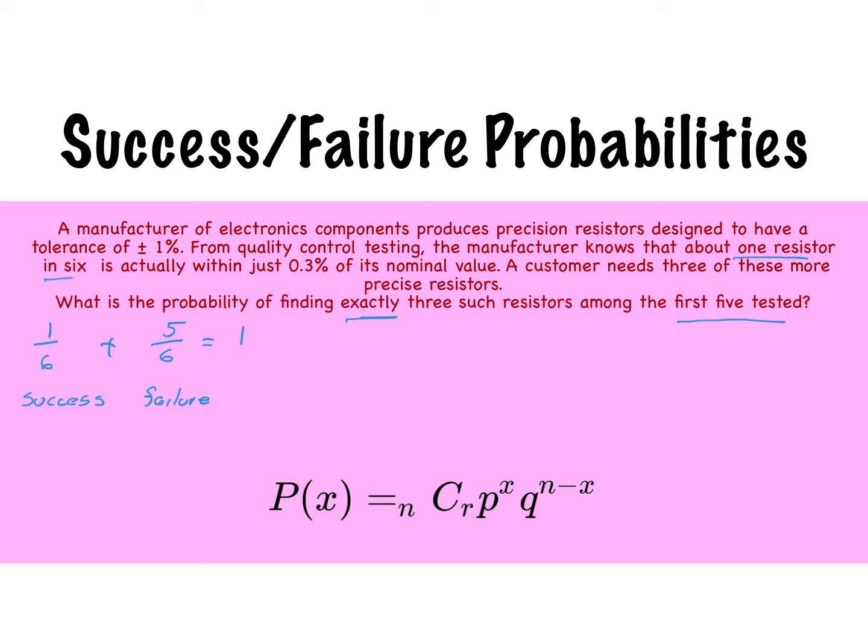So we're trying to find the probability of three resistors amongst five. So looking at our formula here at the bottom of the slide and filling in our values, we're choosing from five, so it's five choose three.